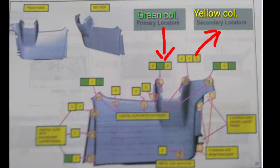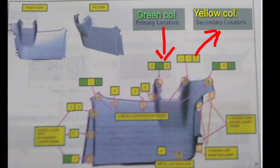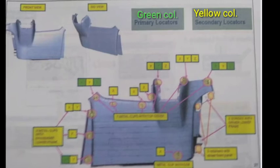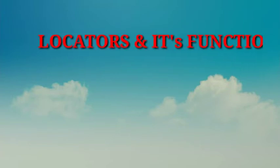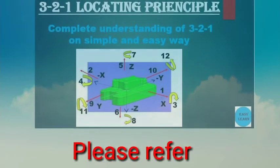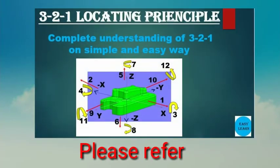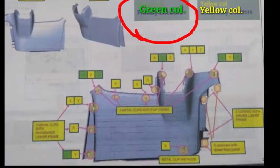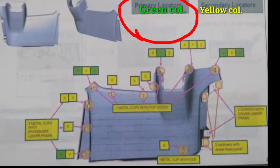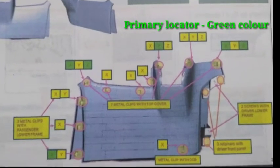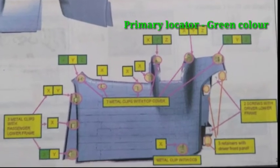Now we are going to see the locators and their functions. Primary locators are defined by the three to one principle. The main function of primary locator is to locate the part in assembly direction and second to maintain fit and finish, that is gap and flush. These are the main two purposes of the primary locator.